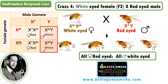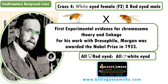He confirmed for the first time that the gene for white eye color is physically located on the X chromosome. He was the first to provide experimental evidence for the chromosome theory and linkage — that genes are present on chromosomes and that certain genes are inherited together, as opposed to Gregor Mendel's independent assortment. He found that some genes are linked and inherited together. For his work with Drosophila, Morgan was awarded the Nobel Prize in 1933.